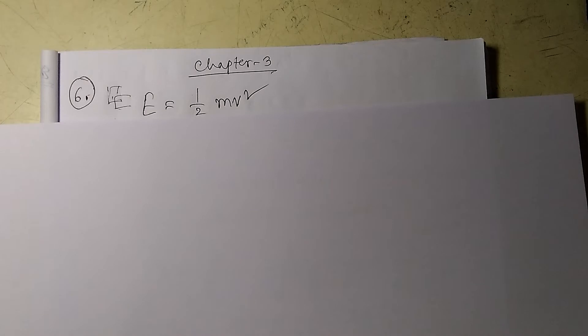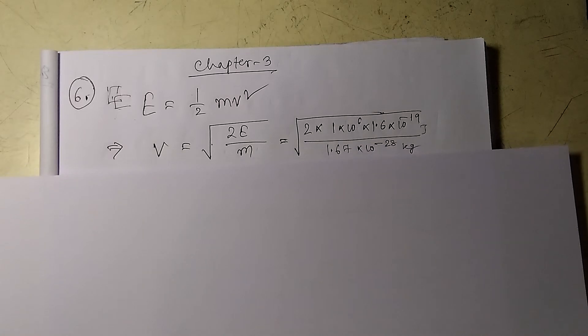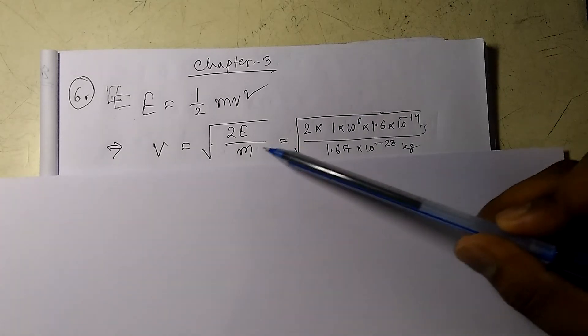I am doing the second part first. We are given the energy, so I am using the formula E equals half MV squared. Then I'm writing V in terms of M and E, and then I put the values of the parameters given in the equation.